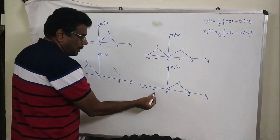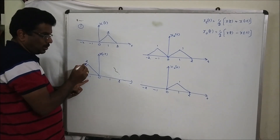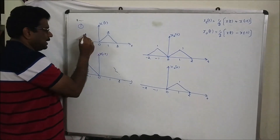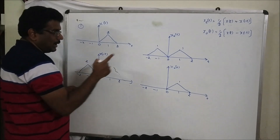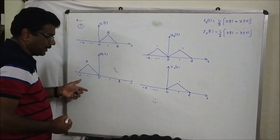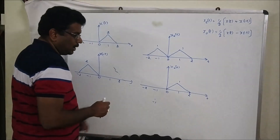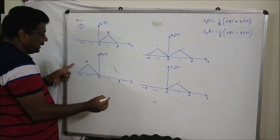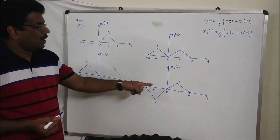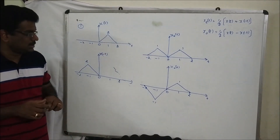At location minus 1: here the amplitude is 0, and here it is 2. As per the formula I subtract: 0 minus 2 equals minus 2, divided by 2 equals minus 1. At location minus 2: 0 here, 0 here. 0 minus 0, divided by 2 equals 0. This is the odd component of the given signal, and this is the even component of the given signal.